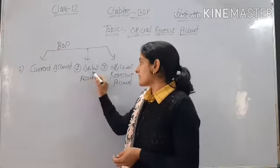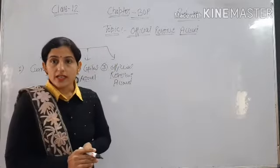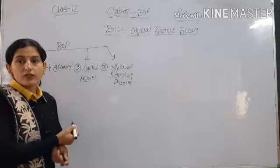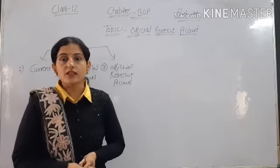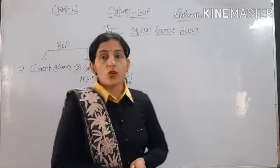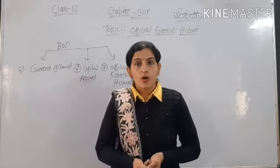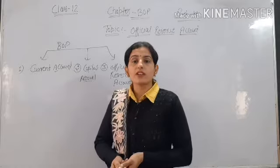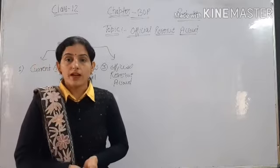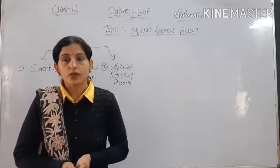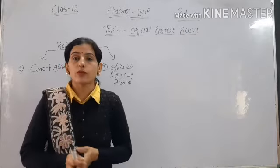Then we talk about capital account. In capital account we show borrowing and investment. Investment includes foreign institutional investment and FDI — foreign direct investment. Borrowing means borrowing from the rest of the world into our domestic country: external borrowing and commercial borrowing. In commercial borrowing, the rate of interest is at market price, and in assistance borrowing the rate of interest is at some concessional range.